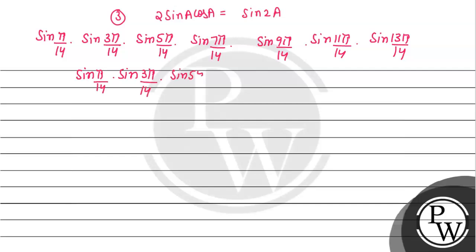Now, sin(7π/14) is basically sin(π/2), and the value of sin(π/2) = 1. So this middle term simply equals 1 and drops out of the product.